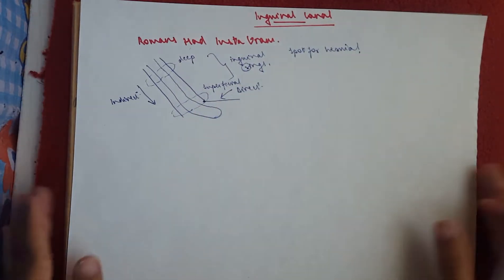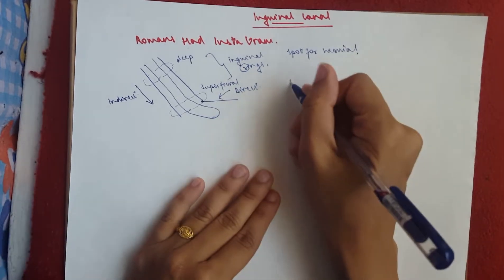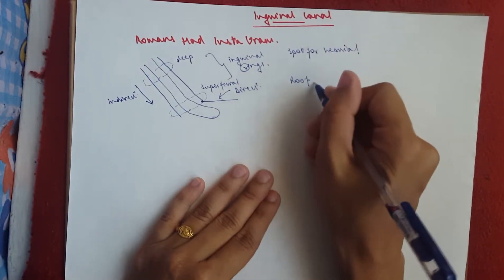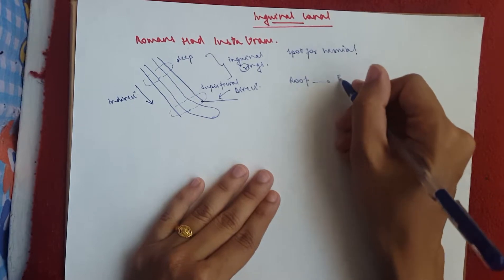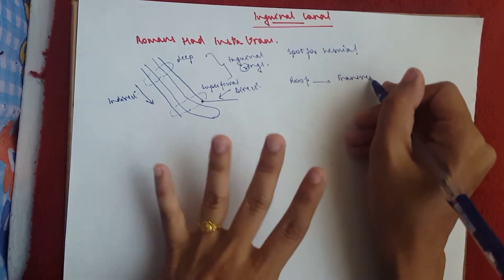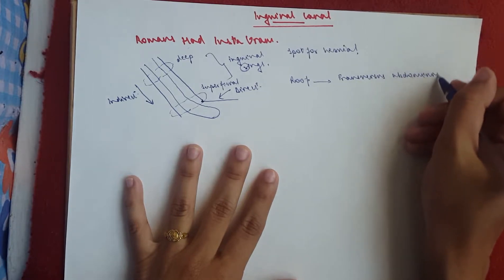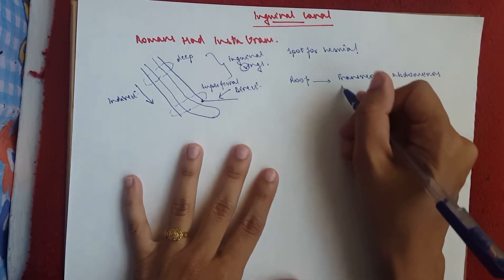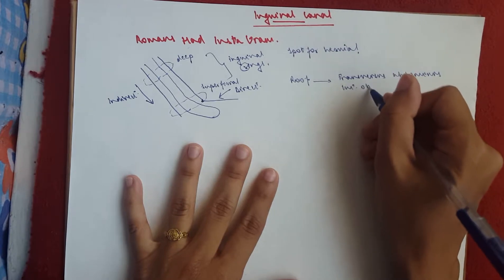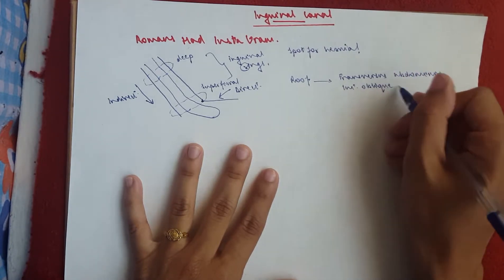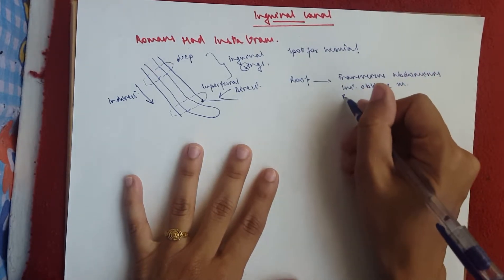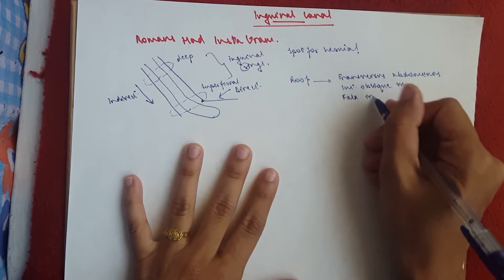All right, now let's talk a bit about the borders. So you've got the roof. And the roof would be the transversus. This is the deeper version. So right above would be the transversus abdominis, the fibers of it, and the internal oblique muscle along with the phalx inguinalis.